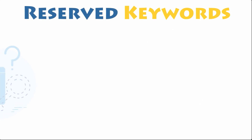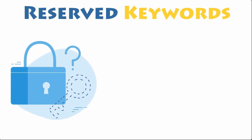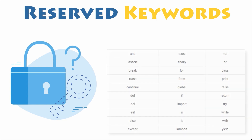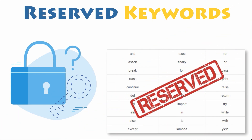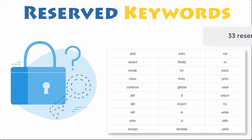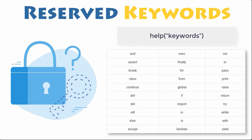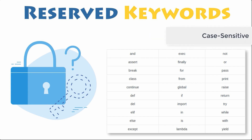Reserved keywords. There is one more restriction on identifier names. The Python language reserves a small set of keywords that designate special language functionality. No object can have the same name as a reserved word. In Python 3, there are currently 33 reserved keywords as described in this table. You can see this list anytime by typing help keywords to the Python interpreter.